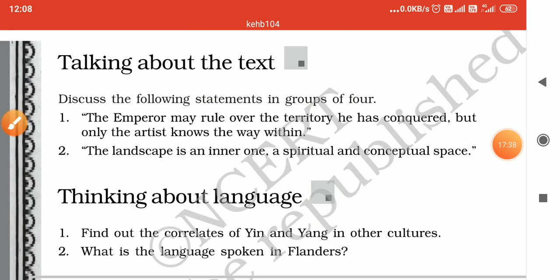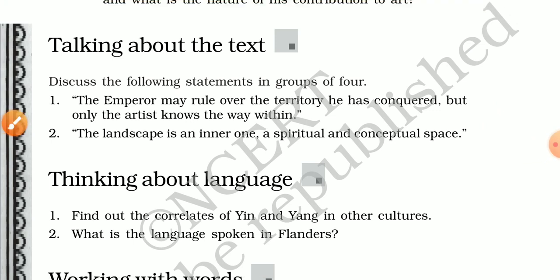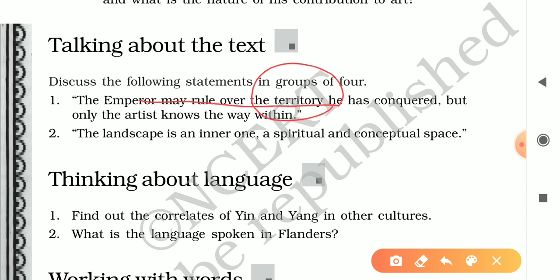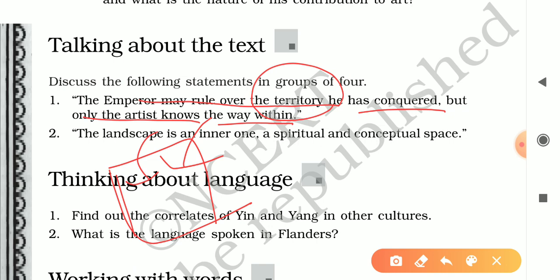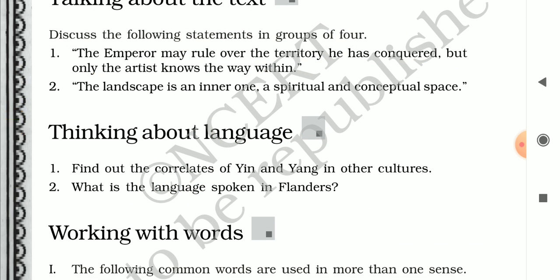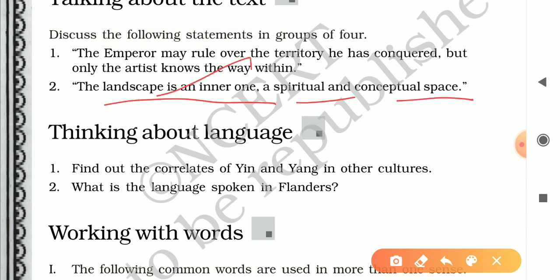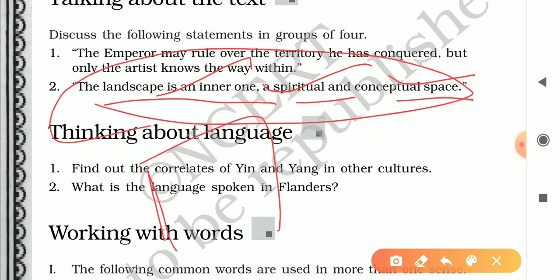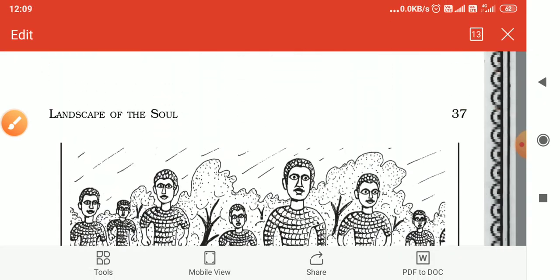The question — 'The emperor may rule over the territory he has conquered, but only the artist knows the way within' — means the emperor can rule the land but cannot understand the landscape painting. Only the painter who created it knows its reality, because he made it with his spiritual and conceptual mind. The landscape is an inner, spiritual, and conceptual space.